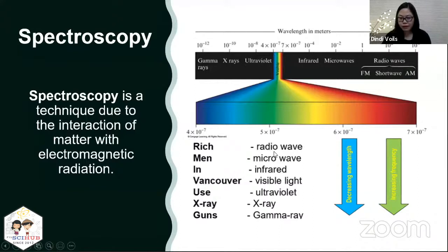In this arrangement, you have the EMR arranged in decreasing wavelength or increasing frequency or increasing energy. In other words, radio wave will have the longest wavelength, gamma ray will have the shortest wavelength, and then radio will have the lowest frequency or energy, and gamma ray will have the highest frequency or highest energy.